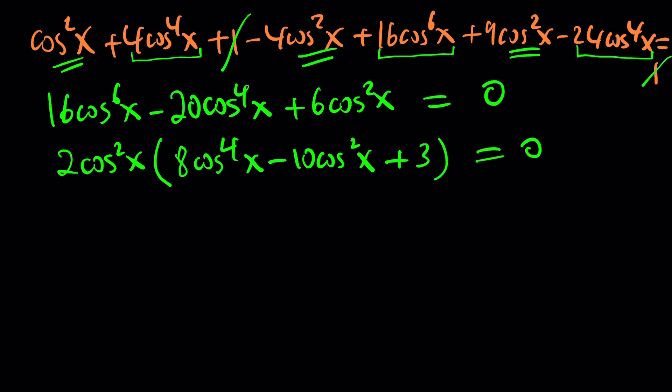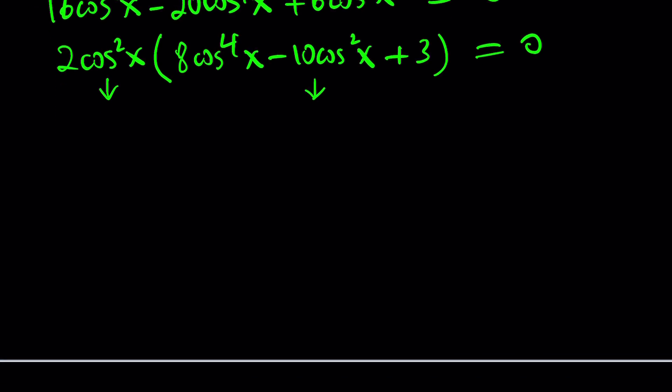So from here we get two things: either cosine squared equals 0 or this equals 0. But what does that mean? Well, this is factorable. If you think of cosine squared x as y, this is going to be like 8y squared minus 10y plus 3. By the x method or y method, this is factorable into 2y minus 1 and 4y minus 3. You could also use the quadratic formula to solve it, and then from the solutions you can go to the factors by using the factor theorem.